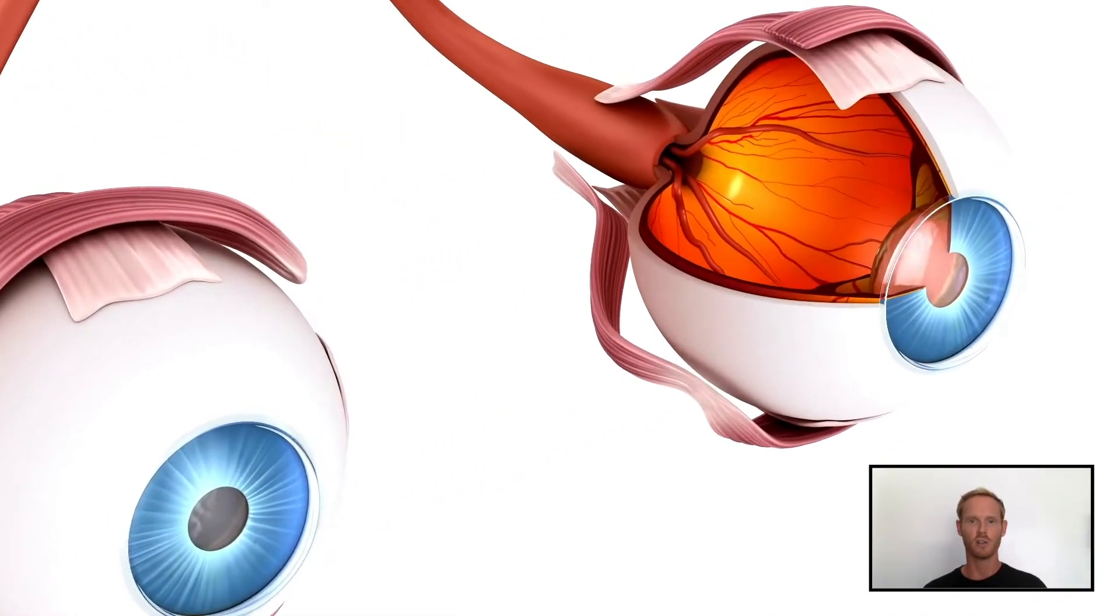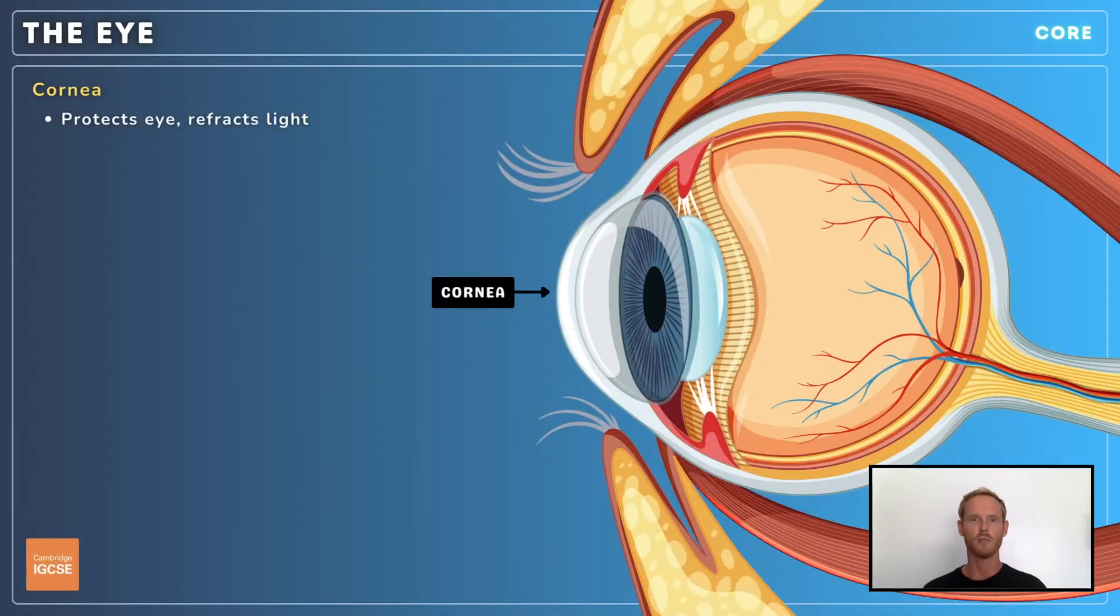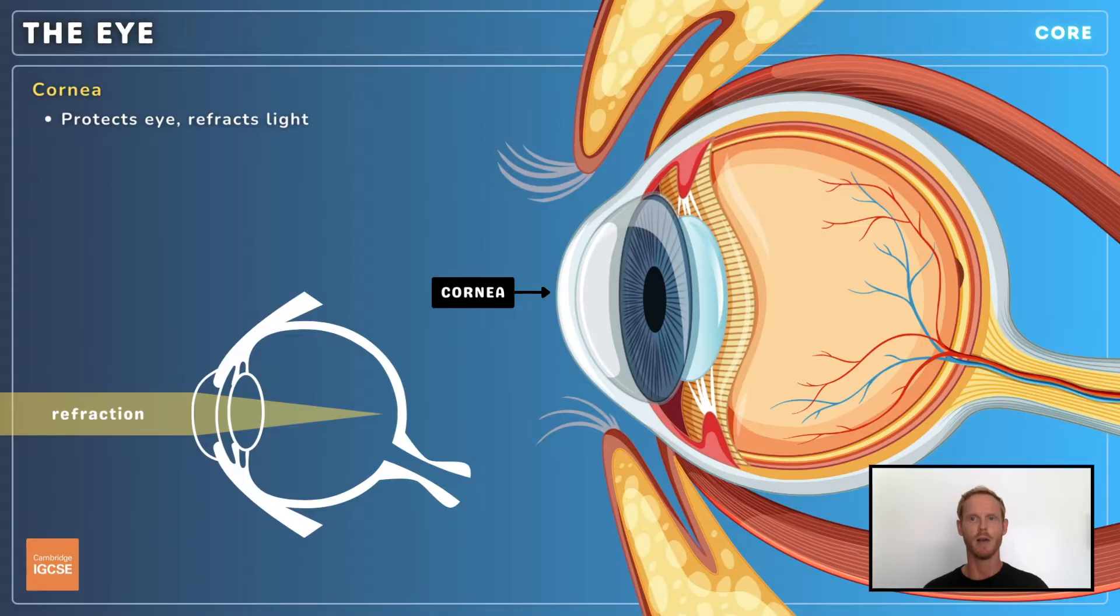We'll begin with the main structures of the eye and their functions. The cornea is a tough, transparent, curved layer located at the front of the eye. It protects the internal structures of the eye and refracts or bends light to help focus it.